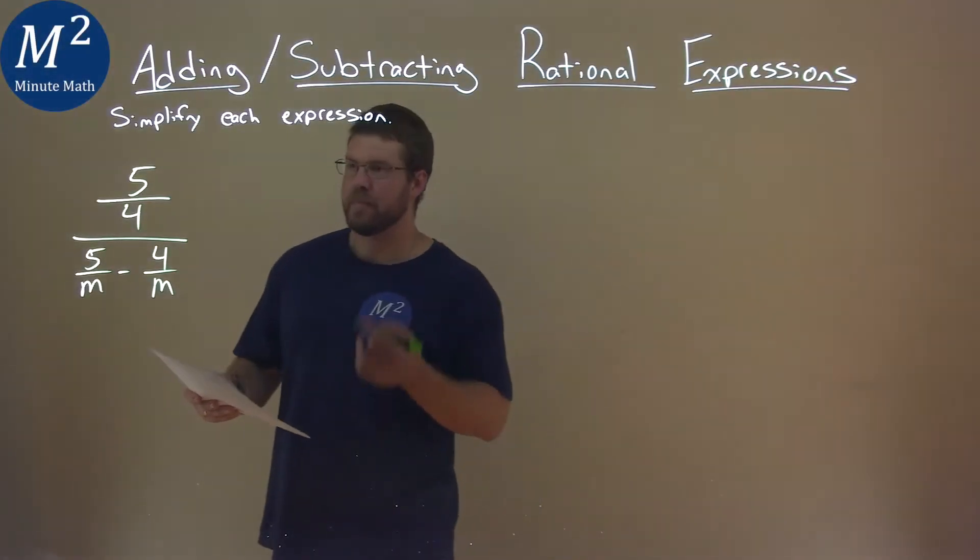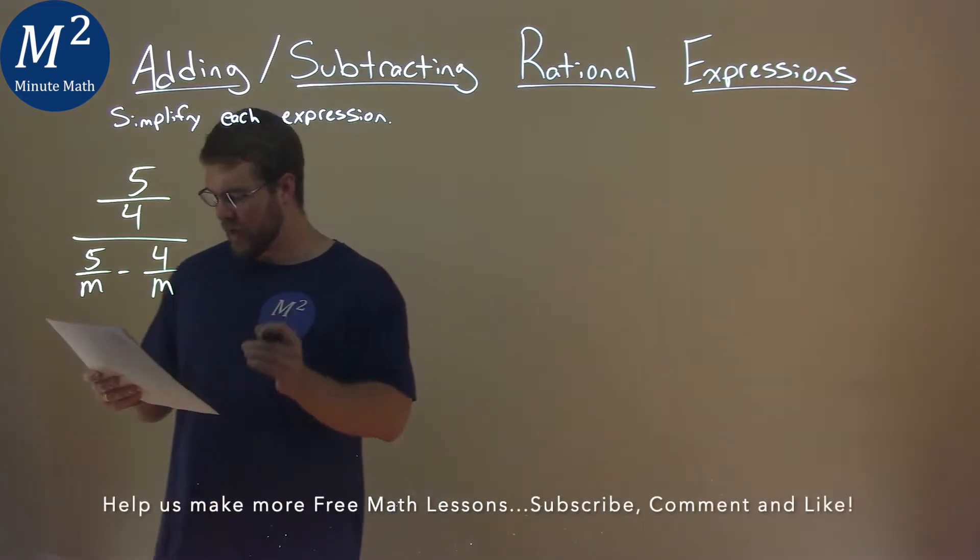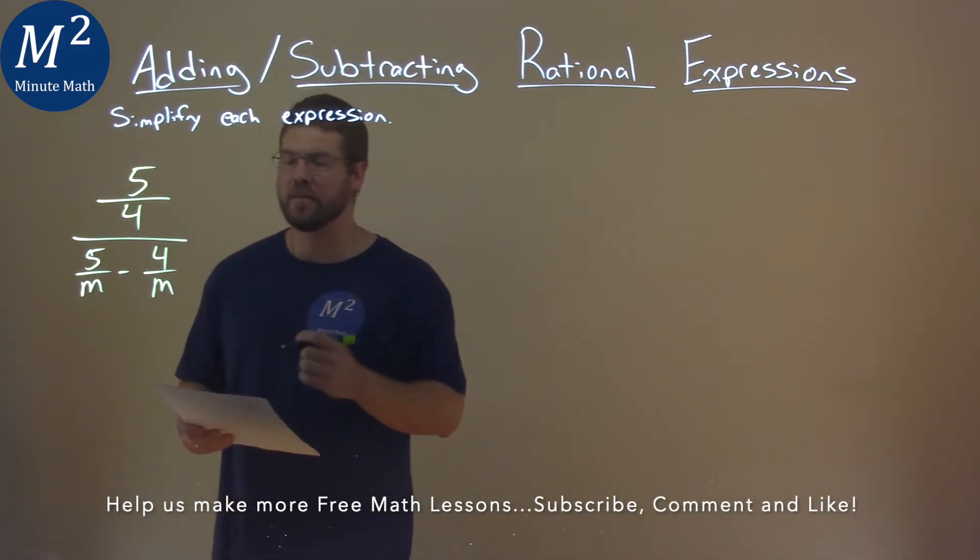We're given this problem right here, 5 fourths over 5m minus 4m, and we need to simplify this expression.